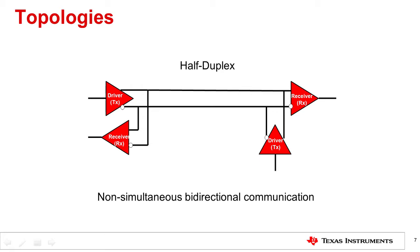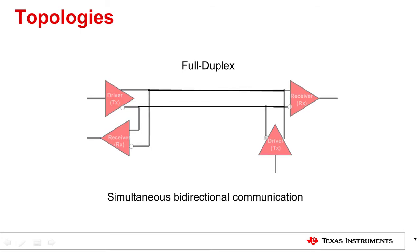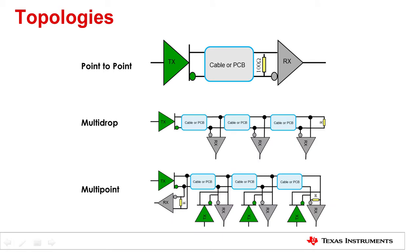In comparison, full duplex is the term for simultaneous bidirectional communication, which allows both ends to communicate simultaneously. With the understanding of these three topologies, let's look at why MLVDS standard is needed.